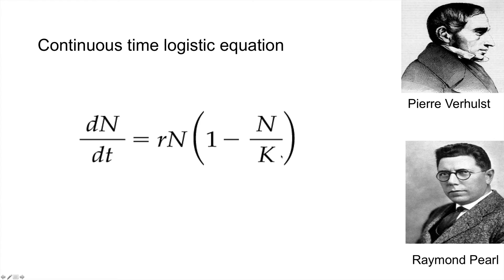Effectively, K has the effect of putting the break on N. As N gets really large, the overall rate of change of this population gets smaller and smaller because this fraction gets closer and closer to 0.